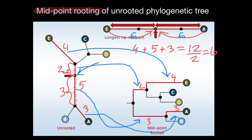So if our calculated midpoint would be very close to other nodes — for example, one node here, another node here — it is very easy to miscalculate and put our midpoint to the right or to the left. In this case, we use a different method which is called outgroup rooting, and I'm going to talk about it in my next video.